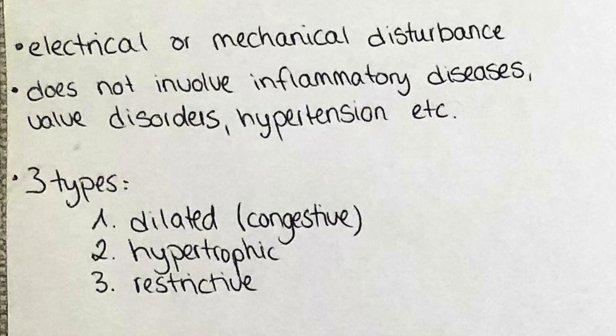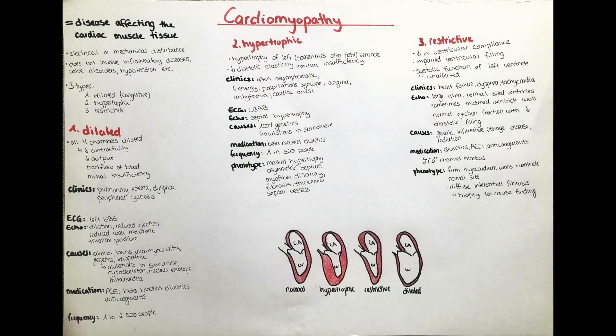Cardiomyopathy presents with three different types: dilated or congestive cardiomyopathy, hypertrophic cardiomyopathy, and restrictive cardiomyopathy. Let's go through them one by one including their clinical presentation, ECG and echocardiography findings, causes, frequency, medications, and pathological morphology.